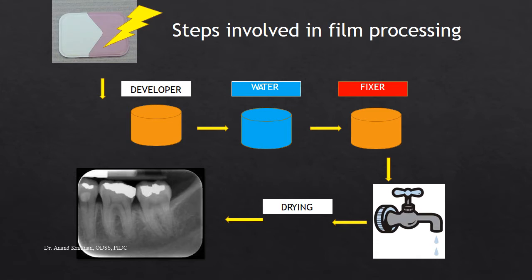The steps for manual processing are common to both methods: you go into the darkroom, open the packet, remove the film, put it in developer, then water, then fixer, then rinse it in running water, and dry it off. The order is the same, but how we approach it differs between the time-temperature and visual methods.